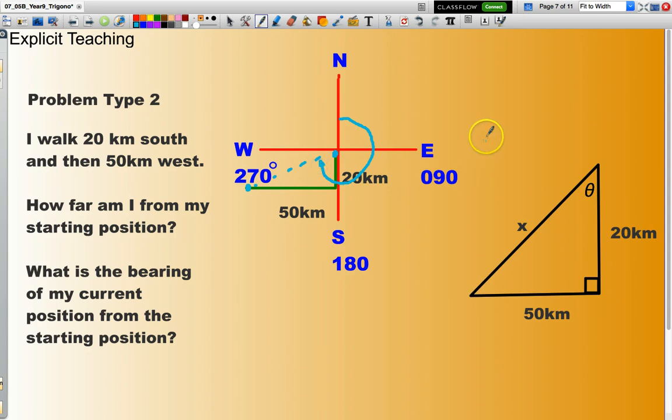Again, I've looked to construct my right angle triangle. You can see here, 20 kilometres south, 50 kilometres towards the west. X is my unknown distance. And theta is the unknown angle that I will be using to help calculate my bearing. That's that angle that's in here. That's my theta.